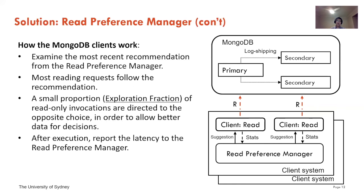Let's discuss how the MongoDB clients work. Before sending out a read-only transaction, the clients first examine the most recent recommendation from the Read Preference Manager, and most reading requests simply follow that recommendation. However, a small proportion of read-only invocations will be directed to the opposite choice. Note that in MongoDB you can only direct reading requests to either the primary copy or secondary copies — you cannot specify which secondary copy. So it is more like a binary choice.